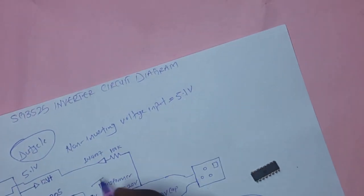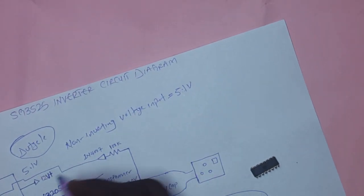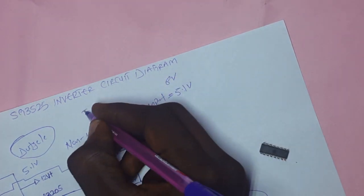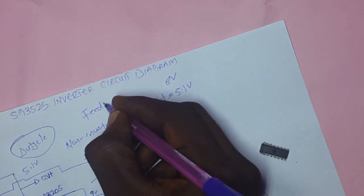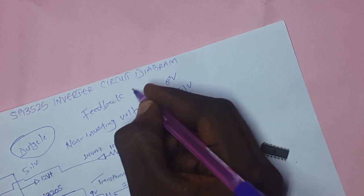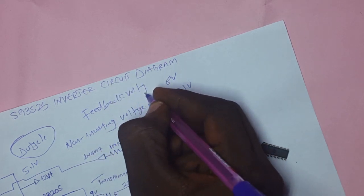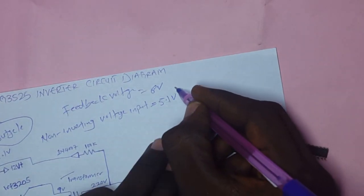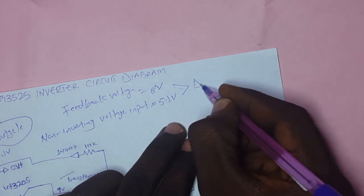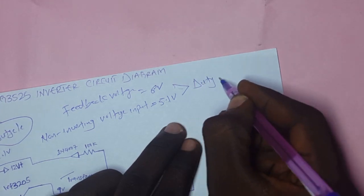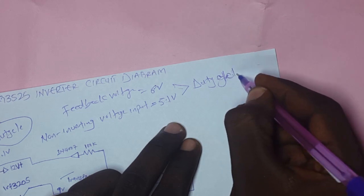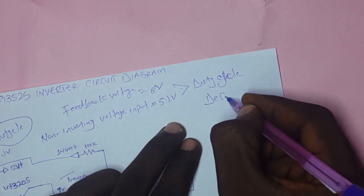For instance, if the feedback voltage is 6 volts, the duty cycle will decrease. Due to the cycle decreases.